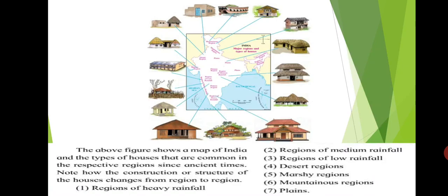This figure shows a map of India and the types of houses that are common in the respective regions since ancient times. Note how the construction or structure of the houses changes from region to region. The different regions you can see in the map are: regions of heavy rainfall, regions of medium rainfall, regions of low rainfall, desert regions, marshy regions, mountainous regions, and plains. This map is in your textbook on page 52. You can go through the map to get a better understanding of how the different types of houses are built as per the type of region.